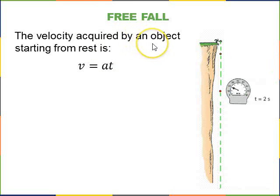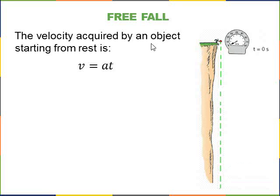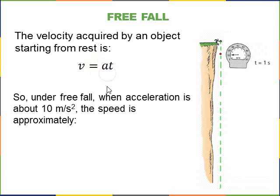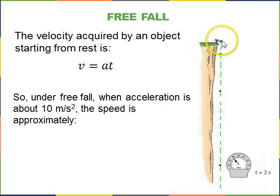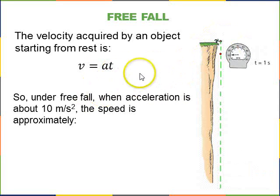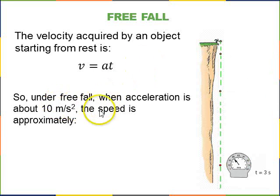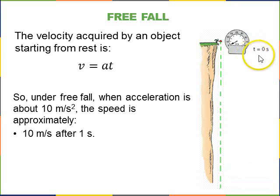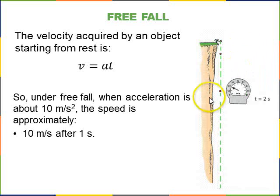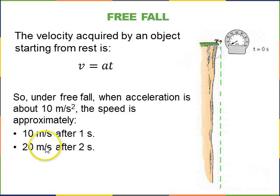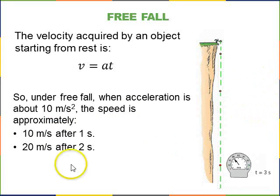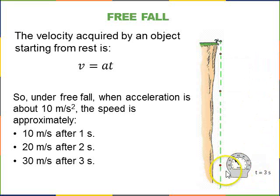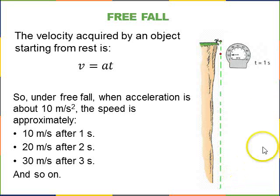The velocity acquired by an object that has a constant acceleration, which starts at rest, is V equals A times T. So under free fall, if you drop an object from rest, if it's going at about 10 meters per second squared, then after 1 second it will be moving at 10 meters per second. That's what this 10 meters per second squared means. Also means that after 2 seconds, it will be moving at 20 meters per second. After 3 seconds, it will be moving at 30 meters per second, and so on.